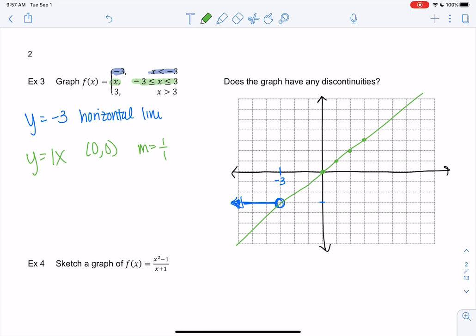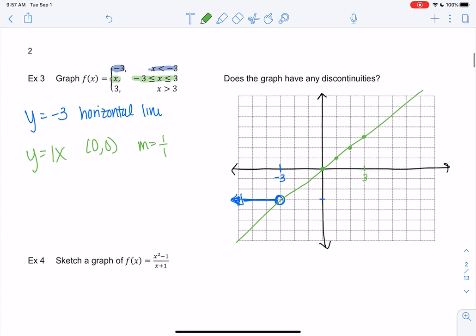It's only in between negative 3 and 3. Negative 3 is included because of the or equal sign, 3 is included because of the or equal sign, and then we're going to include in between and erase the rest.